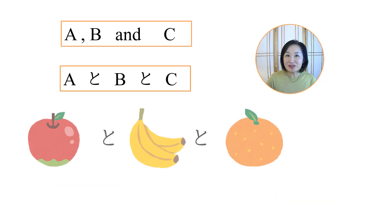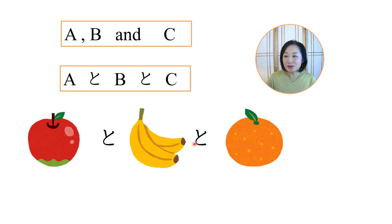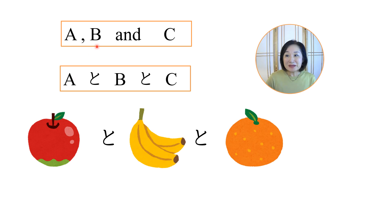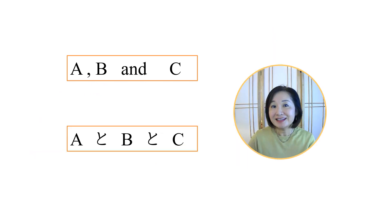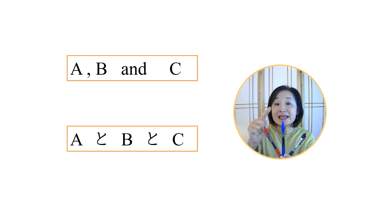With three items, TO is attached to every noun in the list except the last one: りんごと、バナナとおれんじ. The particle TO is inserted between each word. That's the difference between Japanese and English. In English, you put AND only between the last two nouns, like 'apples, bananas, and oranges.' But in Japanese, we put the particle TO between each word.